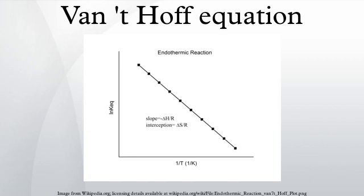The Van't Hoff plot is linear based on the assumption that the enthalpy and entropy are constant with temperature changes. However, in some cases the enthalpy and entropy do change dramatically with temperature. A first-order approximation is to assume that the two different reaction products have different heat capacities. Incorporating this assumption yields an additional term in the expression for the equilibrium constant as a function of temperature. A polynomial fit can then be used to analyze data which exhibits a non-constant standard enthalpy of reaction, and the enthalpy and entropy of a reaction can still be determined at specific temperatures even when a temperature dependence exists.